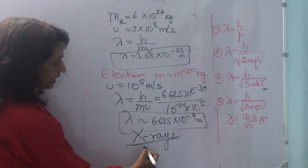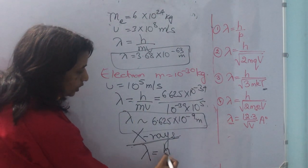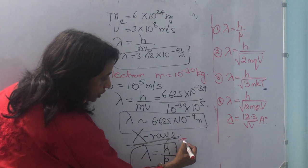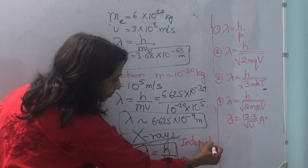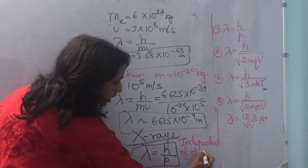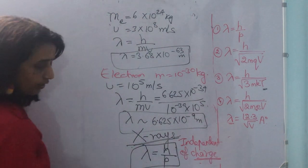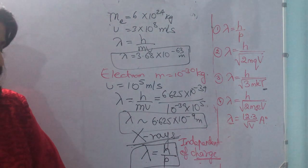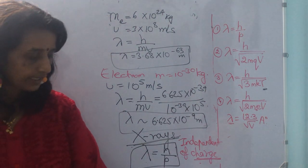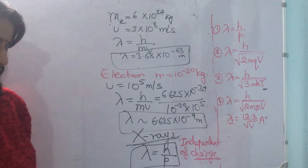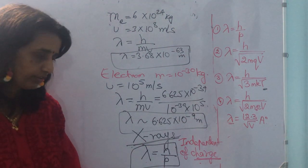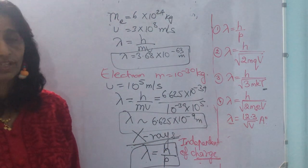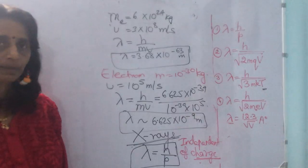Another interesting observation is that the expression lambda = h/p is independent of the charge of the particle — nowhere in the formula does charge appear. Hence matter waves are generated by moving charged particles as well as neutral particles. Lambda = h/p is significant only for microscopic particles. Thank you.